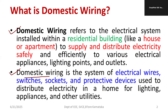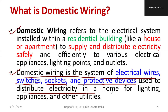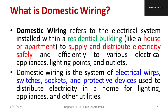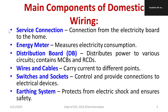Looking at the definition, domestic wiring is a system of electrical wires, control devices such as switches, sockets where we receive power, and protective devices that ensure equipment safety as well as personal safety. These are used to distribute electricity in the house for lighting, appliances, and other utilities. These are the simple definitions of domestic wiring — you can choose whichever definition is most appropriate.